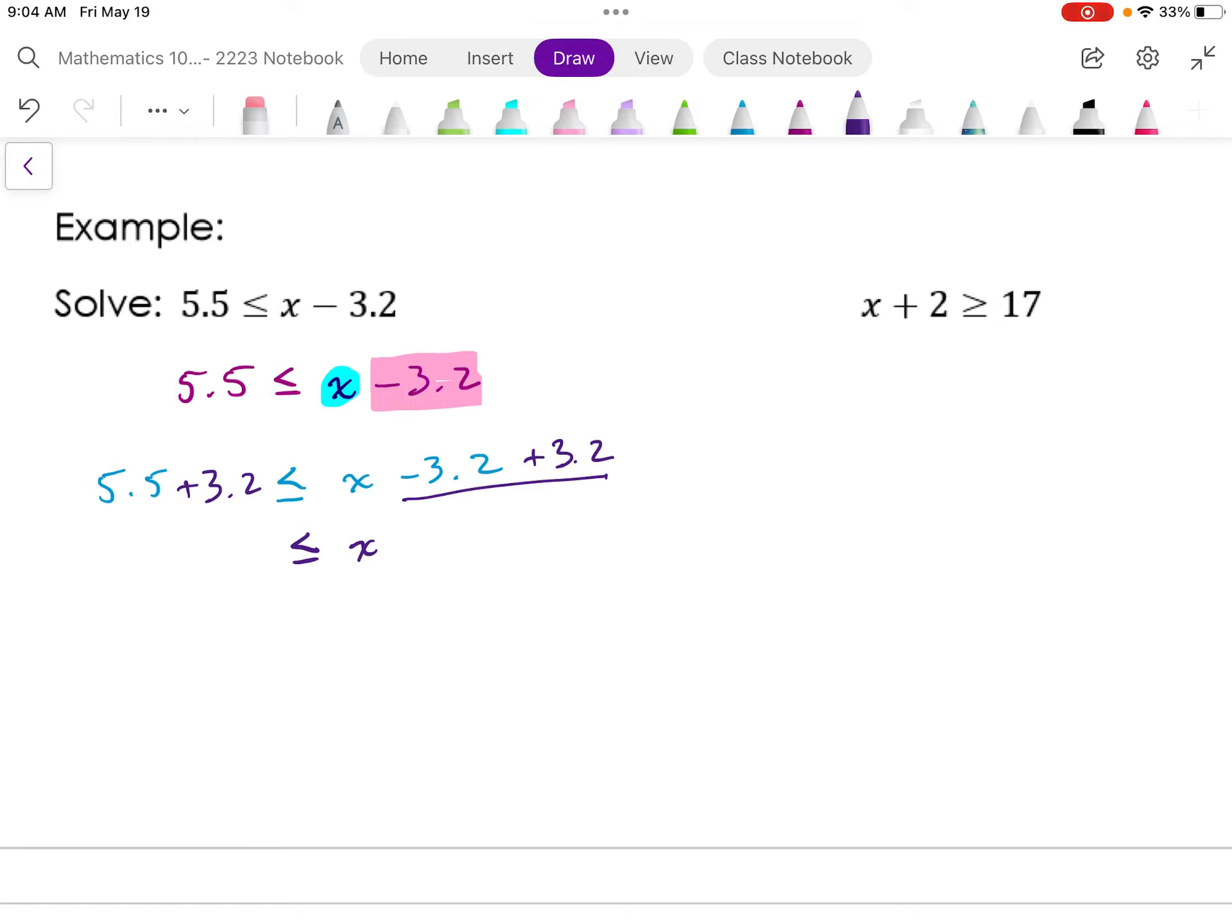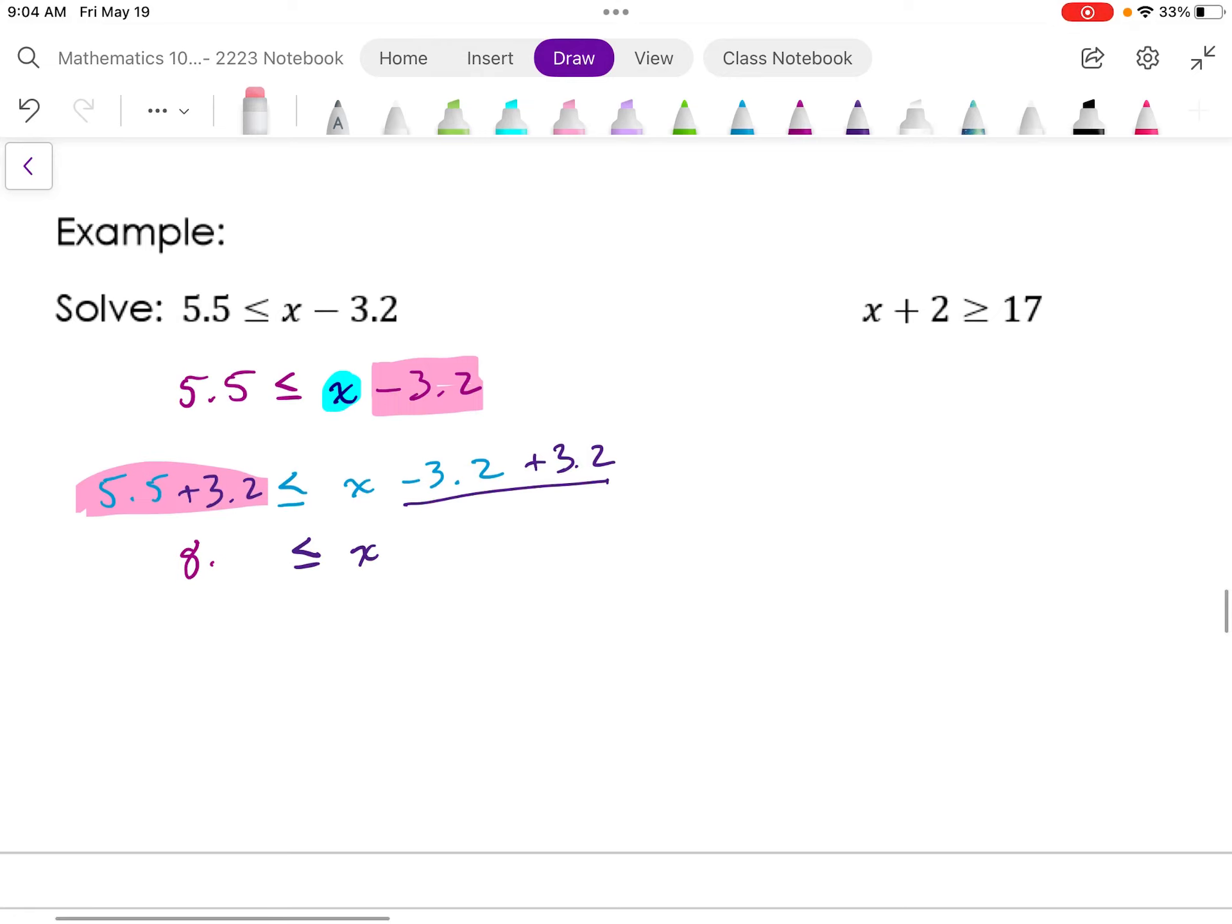Now on the left-hand side, I have to carry out this very simple operation, 5.5 plus 3.2. And that's 8.7.